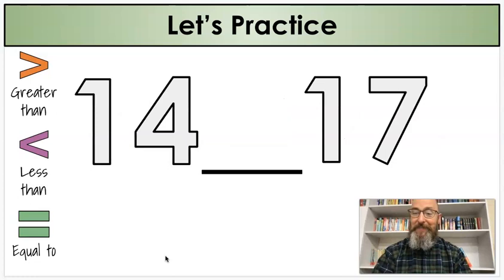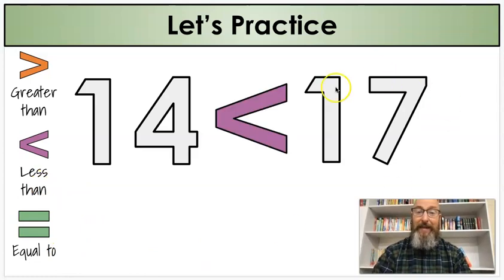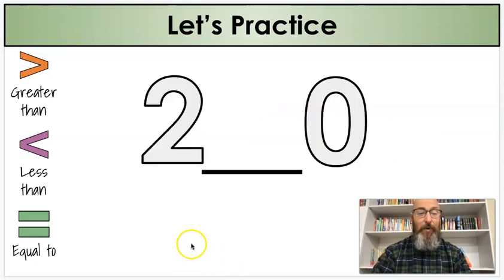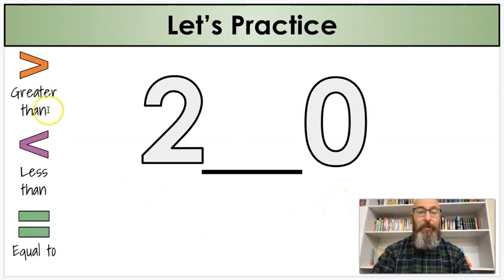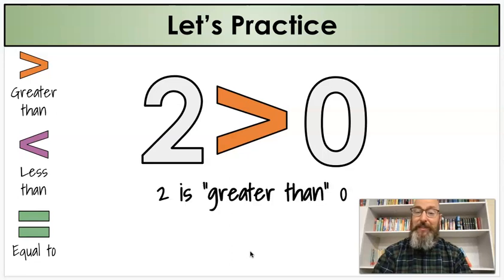Two more numbers — and then one more question after this, and we'll be finished with our practice. Fourteen and seventeen — which one would I pick? Less than. Remember, the alligator eats the bigger number. My sentence: fourteen is less than seventeen. And last one: two and a zero. Two is greater than zero.